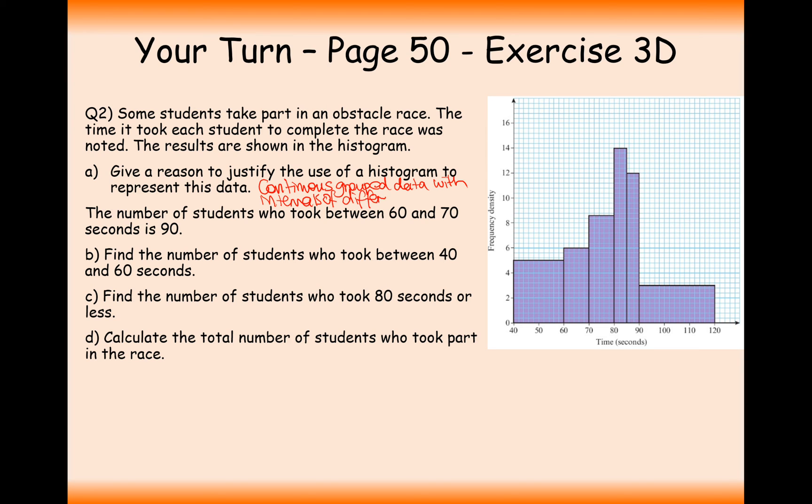What we have here is continuous grouped data with intervals of different widths. So if all the intervals were the same width, you might as well just use a frequency diagram. The key feature of a histogram is that it takes into account how wide your interval was and then works out that as a proportion of the number of students who finished in that interval.